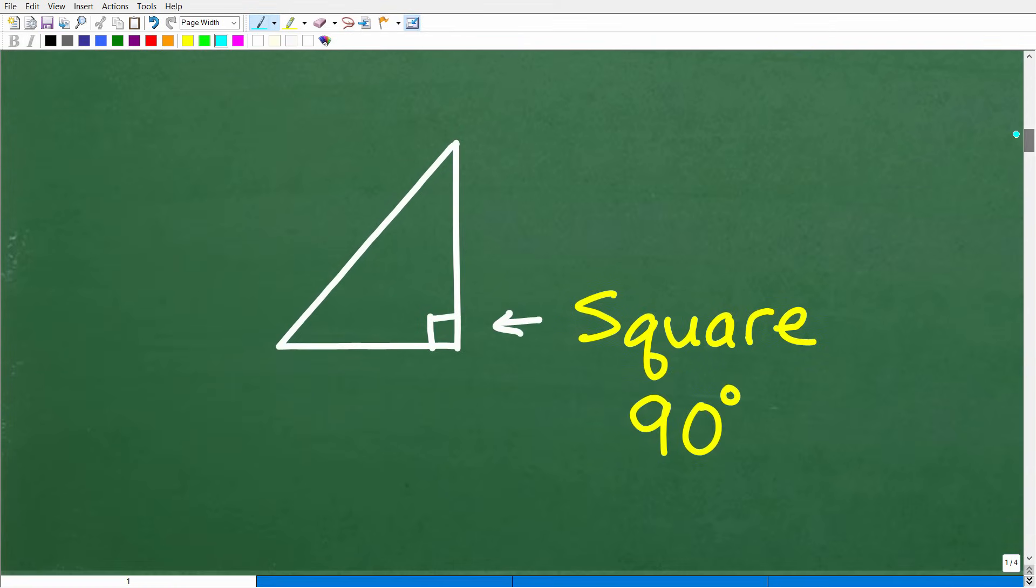But let's just quickly review again what square indicates. So here is a triangle. If this angle right here is a right angle, that means that it is 90 degrees and the notation is like this. But it's oftentimes referred to as a square or something being square.